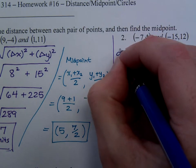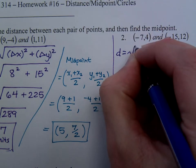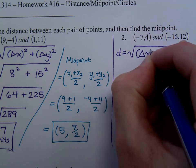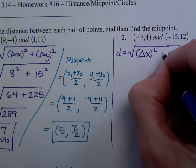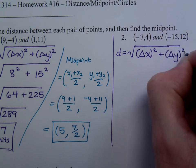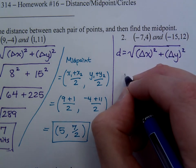So number 2, the distance is the change in x squared plus the change in y squared. Then we take the square root of the sum.